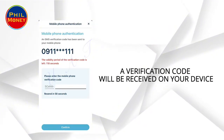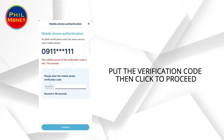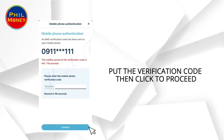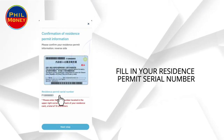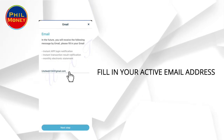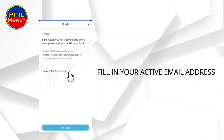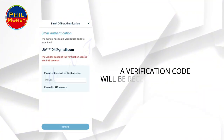A verification code will be received on your device. Enter the verification code, then click to proceed. Upload your required documents and fill in the correct details of your information, including your residence permit serial number.